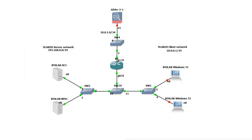A bit of brief background regarding our network topology: we're using GNS3 as the platform. We have our domain controller, our NPS server, and our router. The AAA services will be configured on the router, and it will use the NPS server for RADIUS authentication which will in turn query the domain controller.